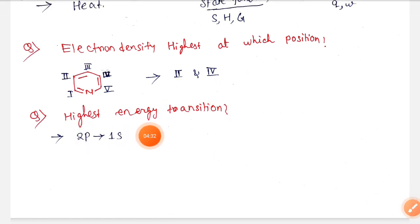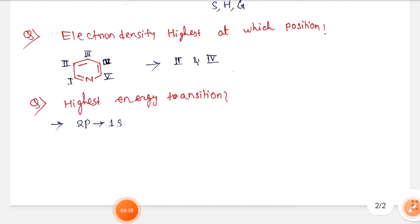Highest energy transition for hydrogen atom, that is 2s to 1s. Okay, thank you.